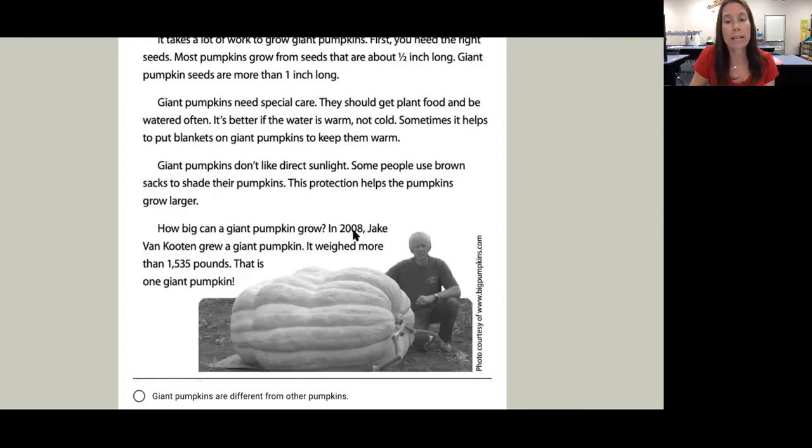In 2008, Jake Van Kooten grew a giant pumpkin. It weighed more than 1,535 pounds. That is one giant pumpkin.